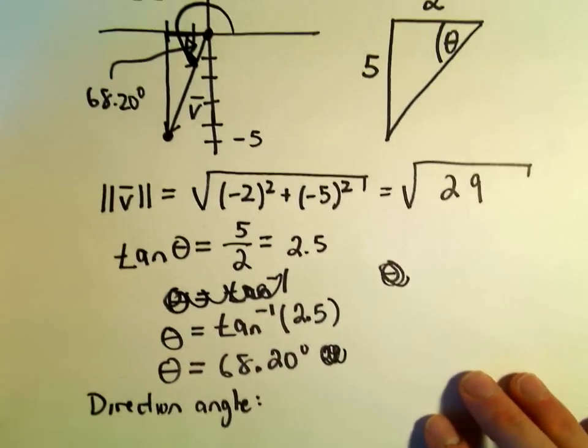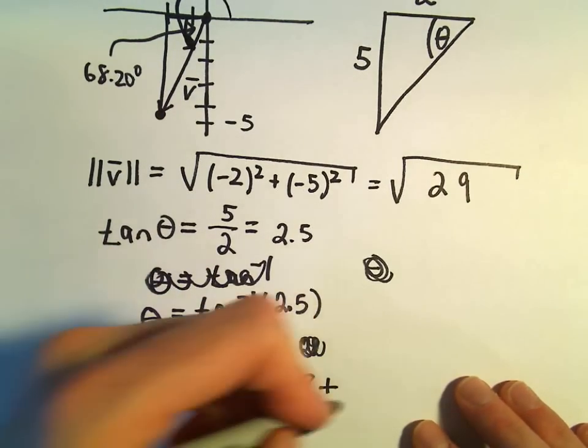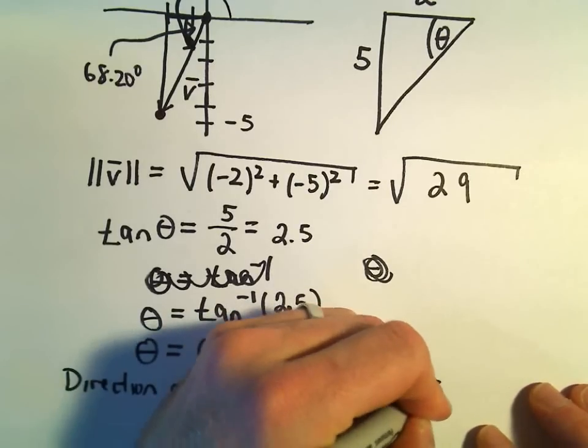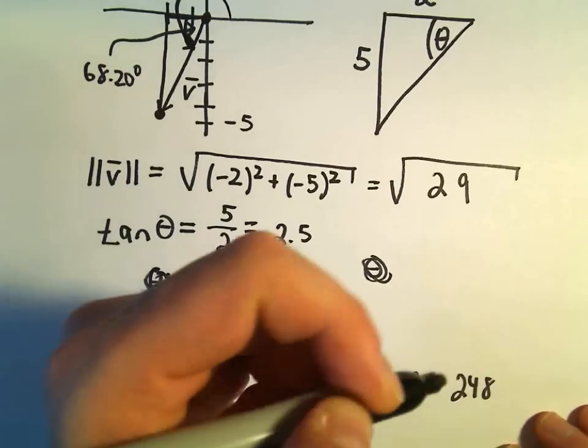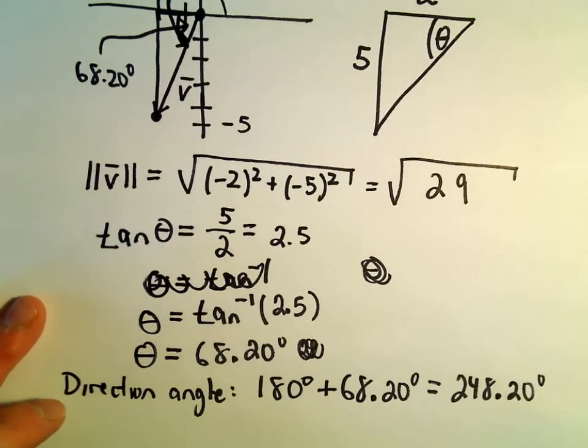Since we're sitting here in quadrant 3, we'll take 180 degrees and add on this value, 68.20 degrees. That's going to give us 248.20 degrees as our direction angle.